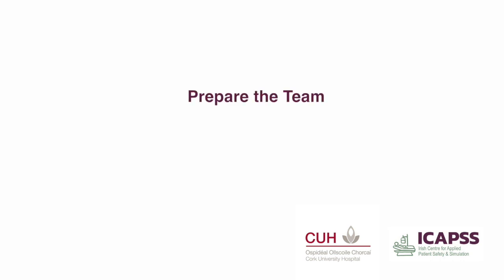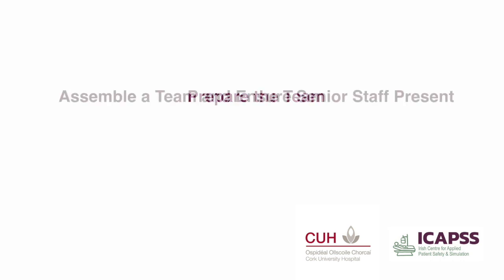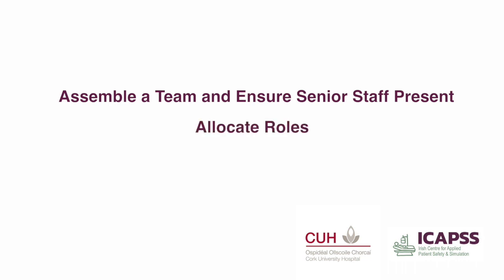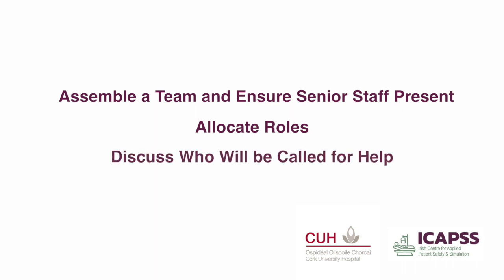Now prepare the team for intubation. Assemble an intubation team and ensure all available senior staff are present. Allocate team roles including: team leader, first intubator, second intubator, team member to apply cricoid force, intubator's assistant, team member to manage drugs, team member to monitor patient and vital signs, runner, team member to provide manual in-line stabilization if indicated, and team member to perform front of neck access if required, and team member to note the time.